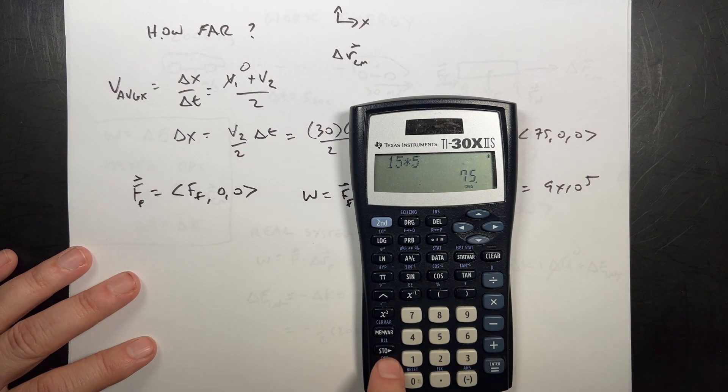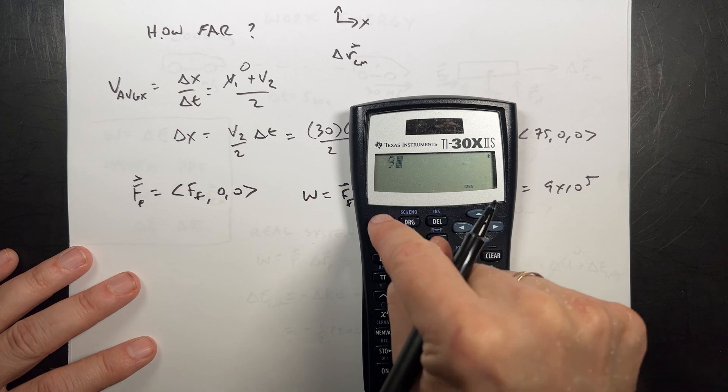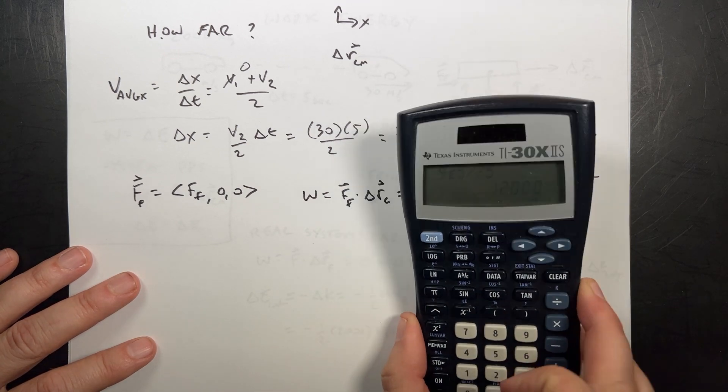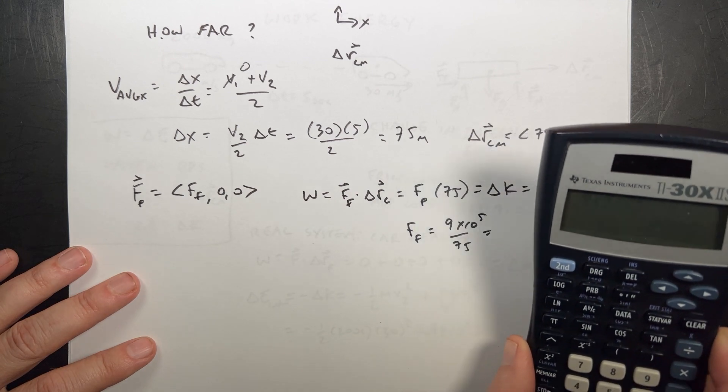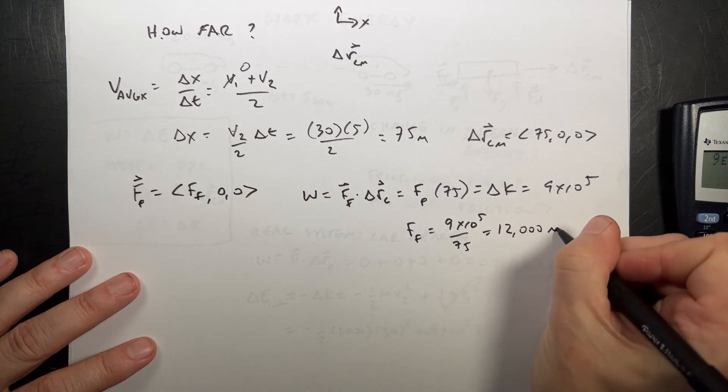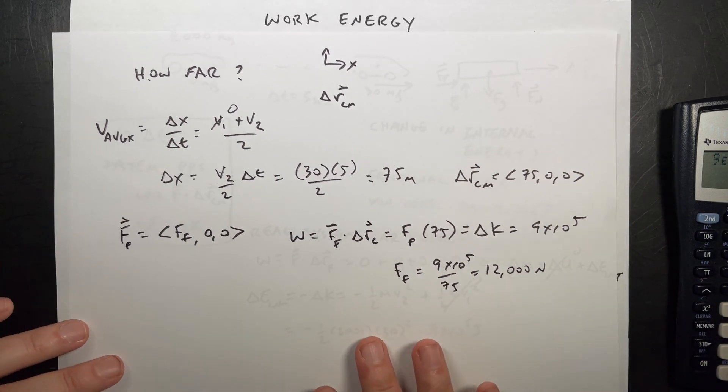I'm not using my holder again. Clear. 9E5 divided by 75. 12,000 newtons. That's the magnitude.